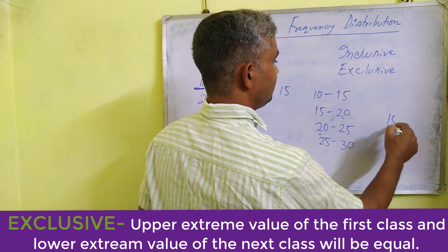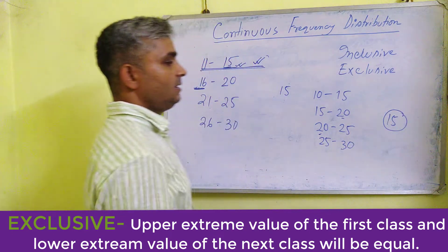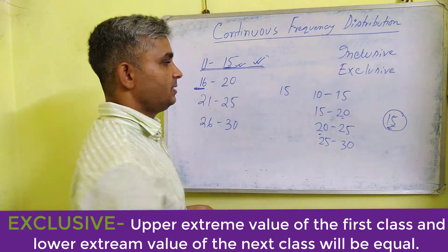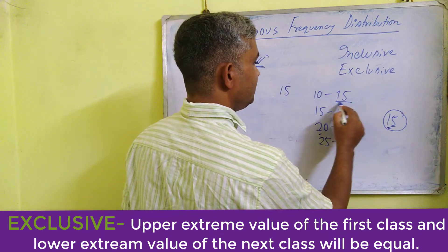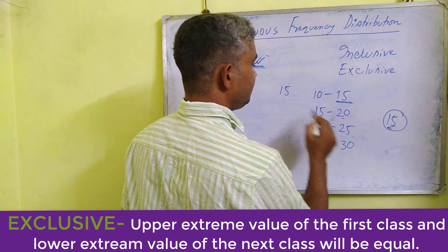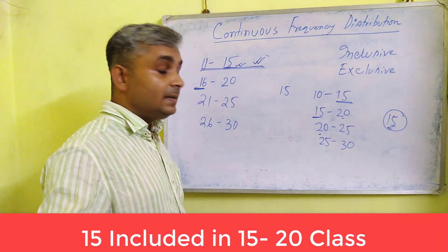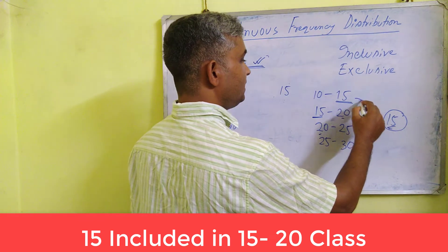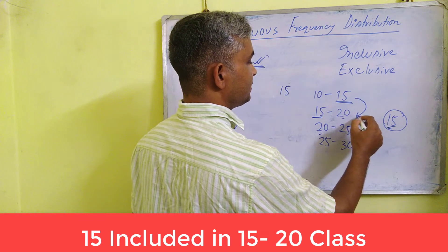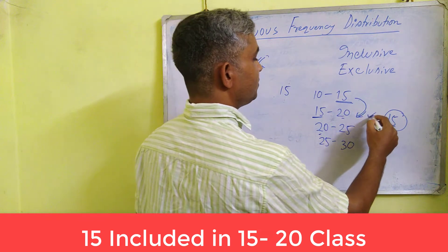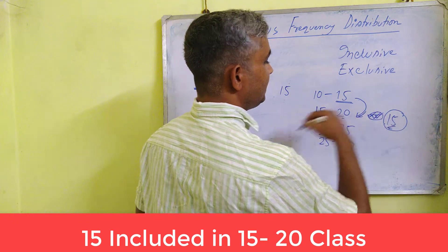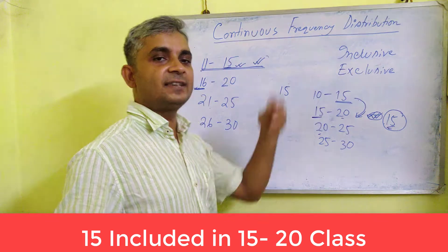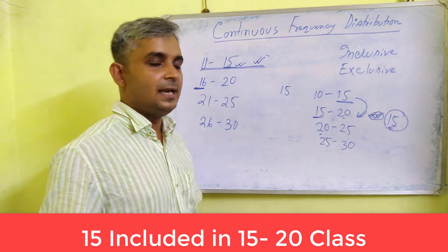In this method, if a data or variable is 15, in which group is this variable included? See, 15 is there and another 15 is here. In this method, 15 is excluded from the first group and included in the next group. So 15 is included in the next group. That is why this method is called the exclusive series or exclusive method or class boundary method.